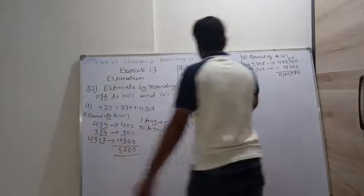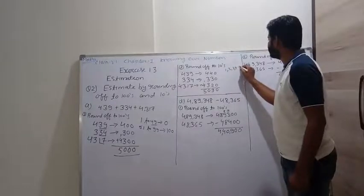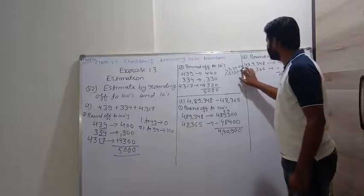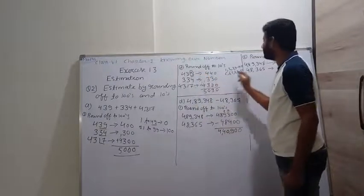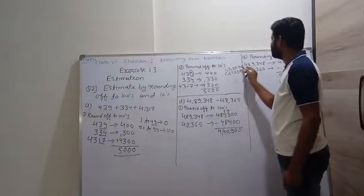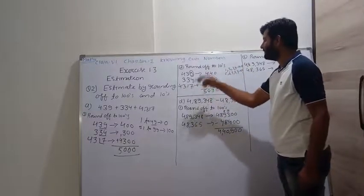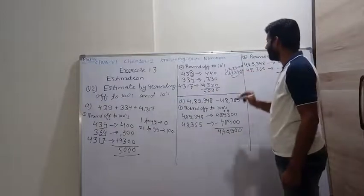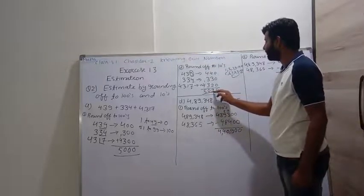Now round off to 10s: for 439, the digit 9 at the units place becomes 10, so it becomes 440. For 334, the digit 4 becomes 0, so it stays as 330. For 4,317, the digit 7 becomes 10, so it becomes 4,320. Adding them: 440 plus 330 plus 4,320 gives 5,090. This is more accurate than rounding to 100s.